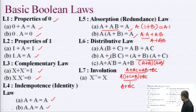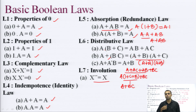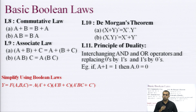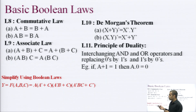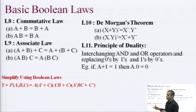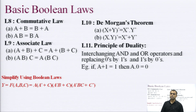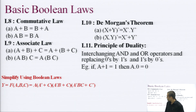The involution law states that any variable double-complemented returns to the original variable: X double complement equals X. The commutative law states A plus B equals B plus A, and A dot B equals B dot A — the order of variables does not affect the result. The associative law states that for three variables, A plus B plus C can be computed by adding any two first: (A plus B) plus C equals A plus (B plus C). Similarly for multiplication, A B into C equals A into B C.